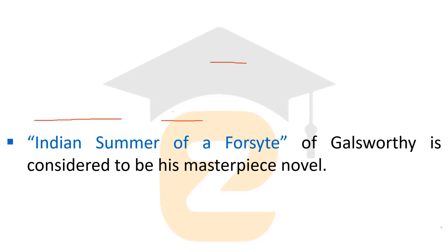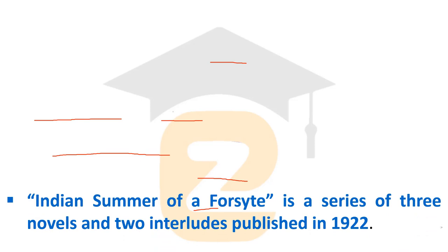Indian Summer of Forsyte is considered to be Galsworthy's masterpiece novel. It is a very important work and contributed to his prominence in the 20th century and his place in the history of English literature. Indian Summer of Forsyte is a series of three novels and two interludes, published in the year 1922.